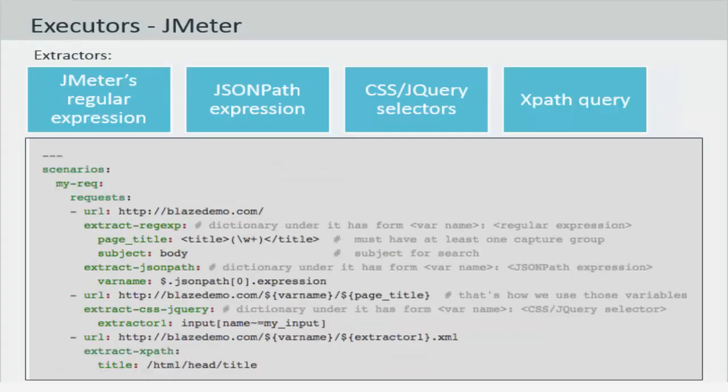Now let's talk a little bit about how Taurus works with extractors. Extractors are objects that are attached to a request to take a piece of response and use it in the subsequent request. The concept is based on JMeter's extractors. Taurus can use different types of extractors. It can support extractors by regular expression, by JSON path expression, by CSS or jQuery selectors, or even by XPath query. You have a couple of examples on the screen.